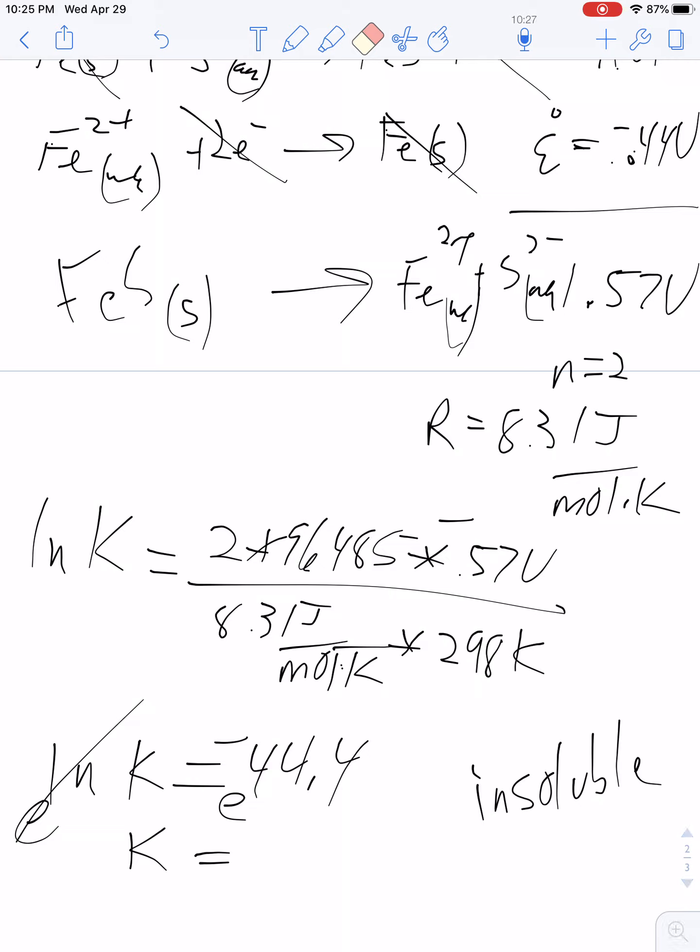Now I get the correct answer. 5.21 times 10 to the negative 20th. So that means that, like I said before, I just had it reversed. Iron sulfide for intents and purposes is not soluble. So at least that part I got right. So very little of it will dissolve because the Ksp is so small.